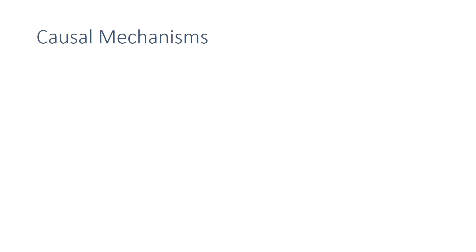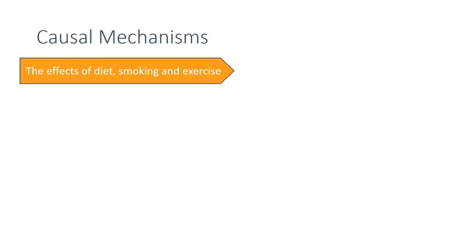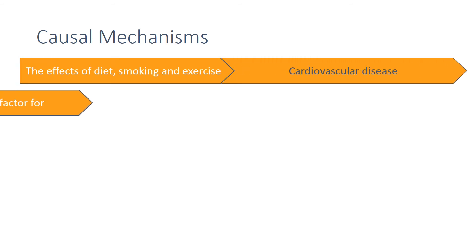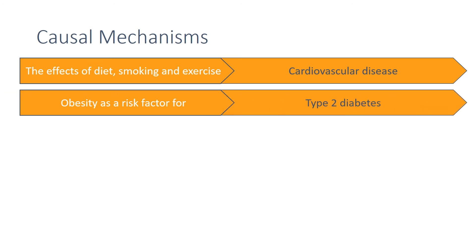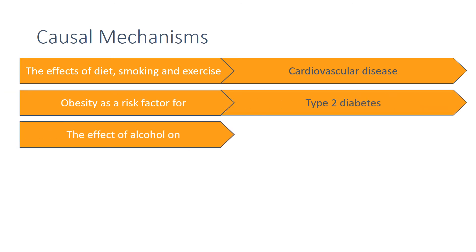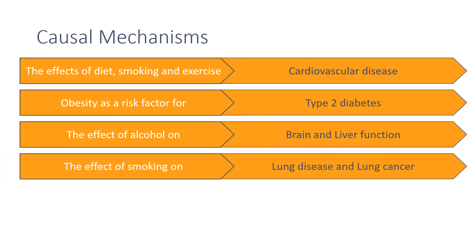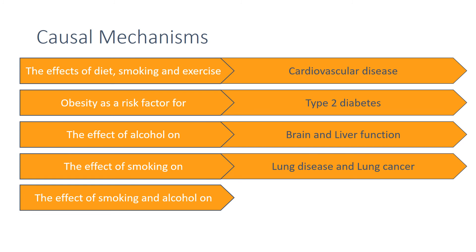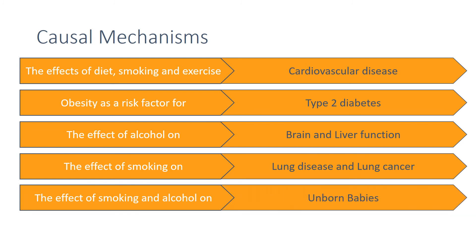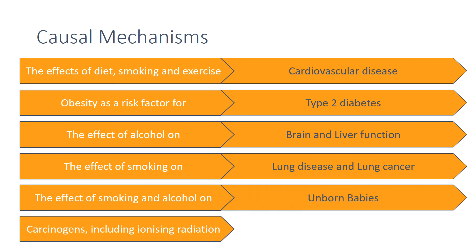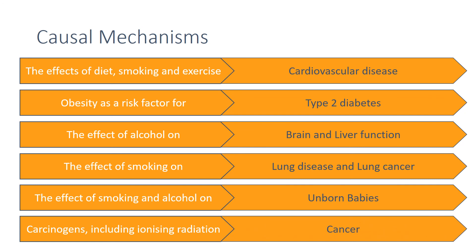Though many causal mechanisms have been suggested for some diseases, the following have a proven link that you need to know: the effects of diet, smoking, and exercise on cardiovascular disease; obesity as a risk factor for type 2 diabetes; the effect of alcohol on the liver and on brain function; the effects of smoking on lung disease and lung cancer; the effects of smoking and alcohol on unborn babies; and carcinogens including ionizing radiation as risk factors in cancer.